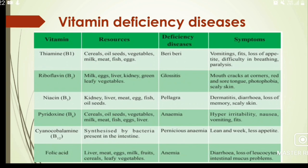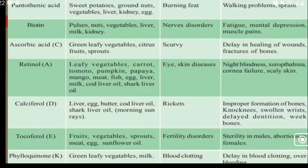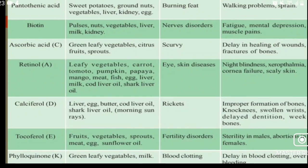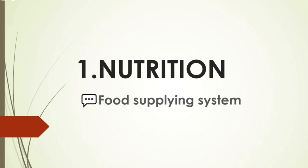Pantothenic acid sources are sweet potatoes, groundnuts, vegetables, liver, and kidney. Its deficiency disease causes burning feet and walking problems. Other important vitamins to study include Biotin, Ascorbic acid, Retinol, Calciferol, Tocopherol, and Phylloquinol. These are very important topics in the first chapter of biology — Nutrition. Learn all these topics for your board examinations. For any doubts, please comment below and share with your friends.